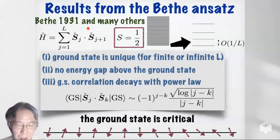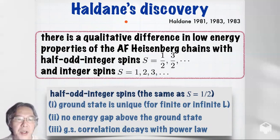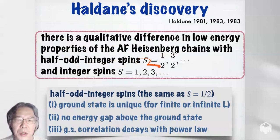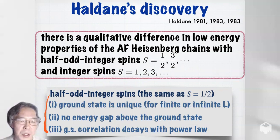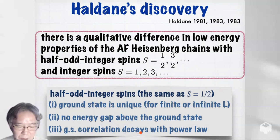This is 1931. Fifty years later, Duncan Haldane made a very interesting discovery, which brought him the 2016 Nobel Prize in Physics. He argued that there is a qualitative difference in low-energy properties of this model between half-integer spin — S = one-half, three-halves — and integer spin — S = one, two, three. For half-integer spin, the situation is exactly the same as spin-one-half: unique ground state, no energy gap, correlation decays with power law.